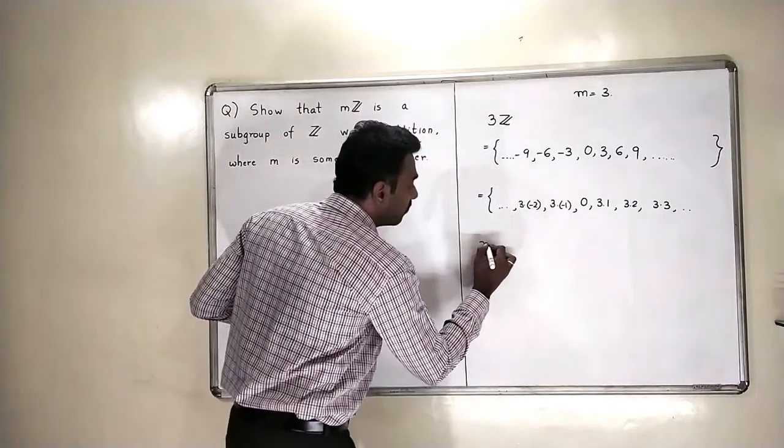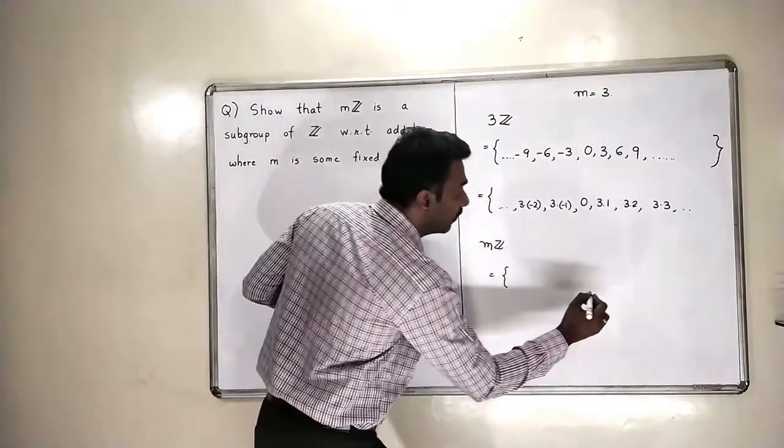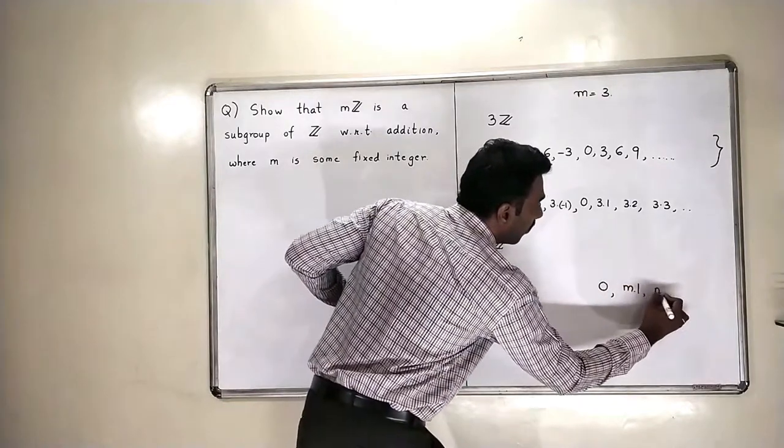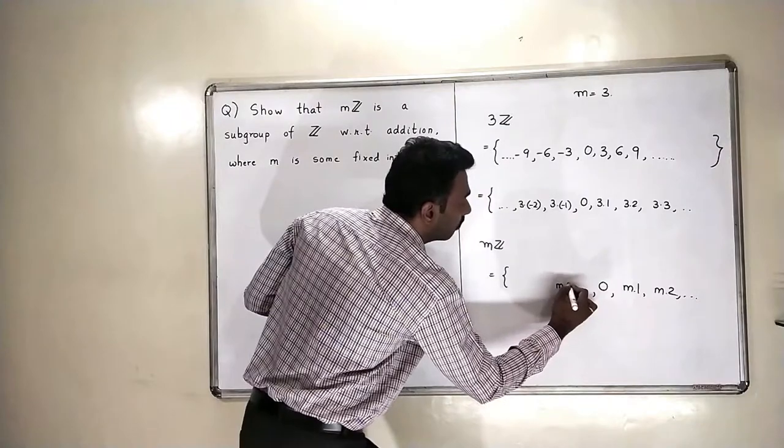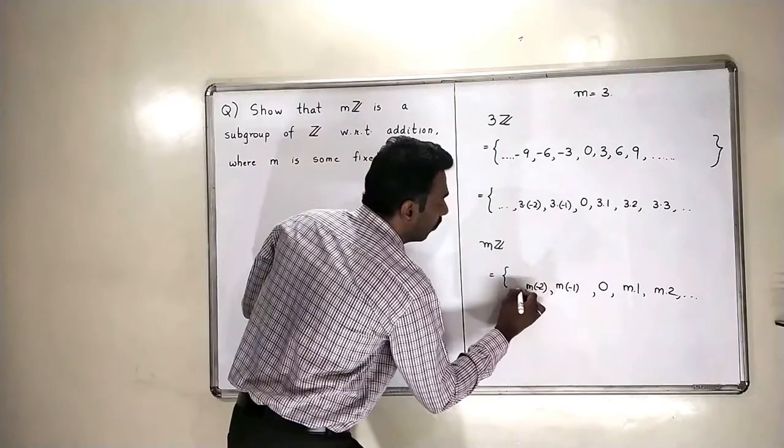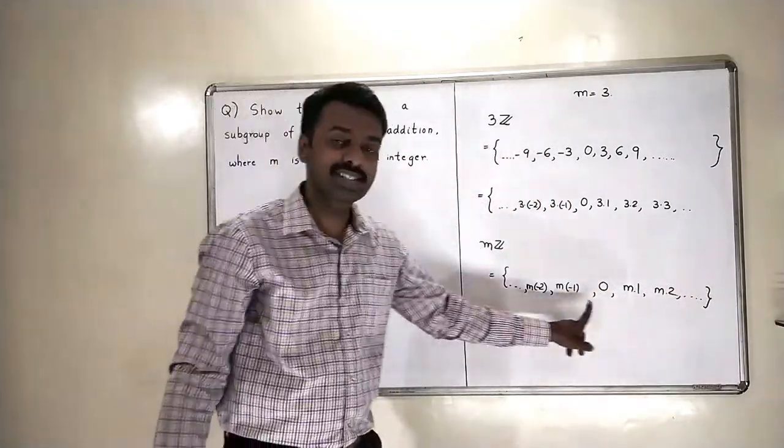So, when I am taking mZ, my mZ contains what? 0, m times 1, m times 2 and so on. M times minus 1, m times minus 2 and so on. So, this is our set mZ.